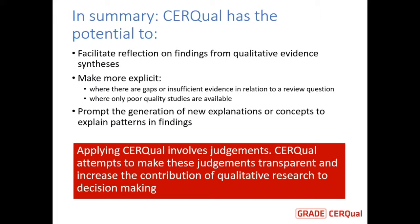The adequacy element is particularly important there, but the others may be important too. For example, if you have only partially relevant data. CIRQL also identifies where any poor quality studies are available in relation to specific public health issues, and has the potential to prompt generation of new explanations or concepts to explain patterns and findings.